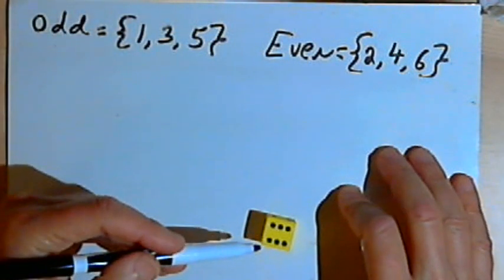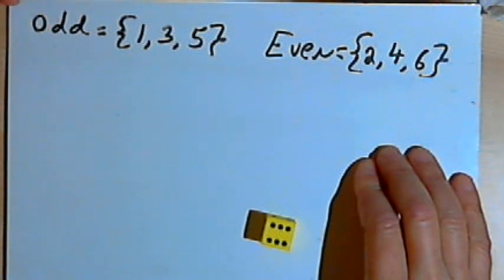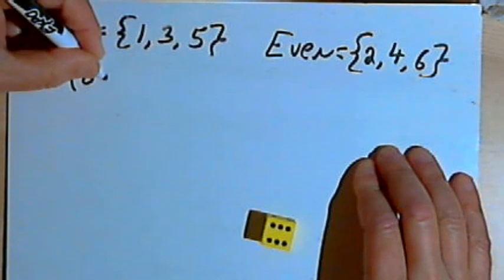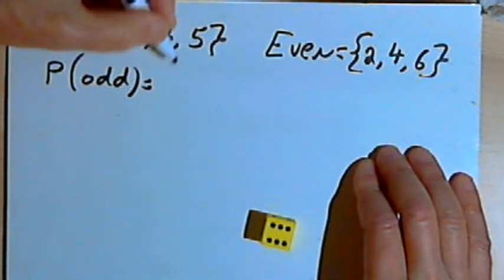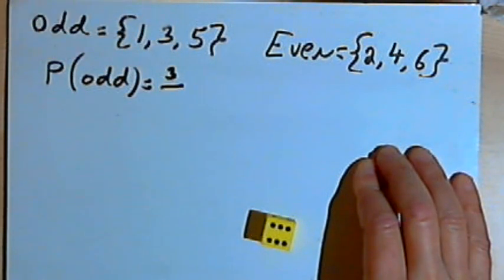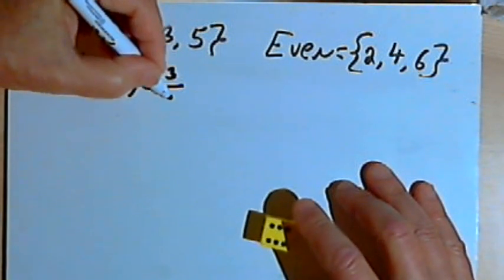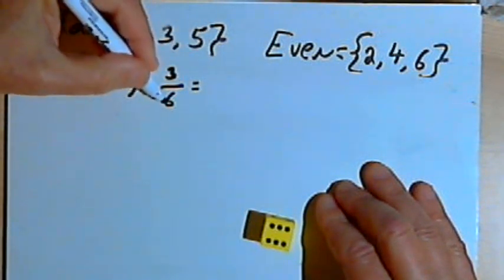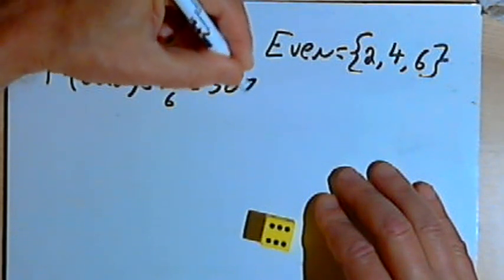Now I can figure out, theoretically, without even throwing the die, what the probability of getting an odd number should be. So the probability of an odd number would just be the number of ways that I can throw an odd number, and there's three different ways, 1, 3, or 5, divided by the total number of outcomes I could have. The die has six sides, so there are six different outcomes. So the probability is 3 over 6 that I'll get an odd number, or 1 half, or let's just write that as 50 percent.